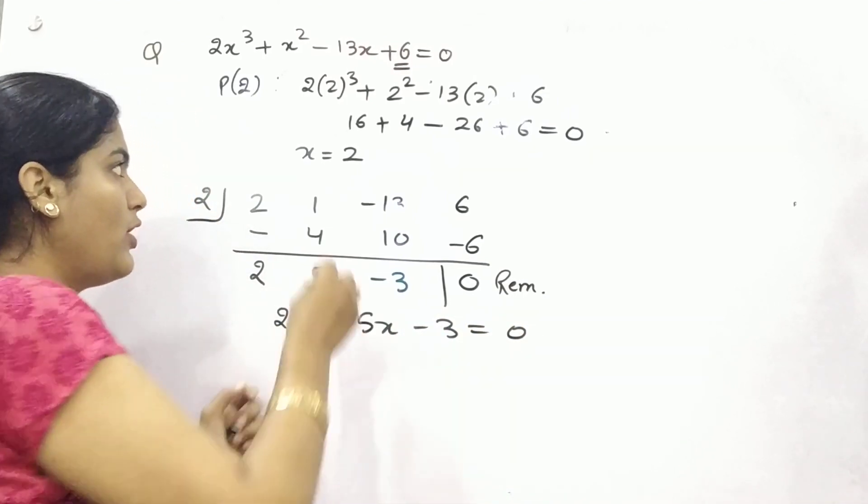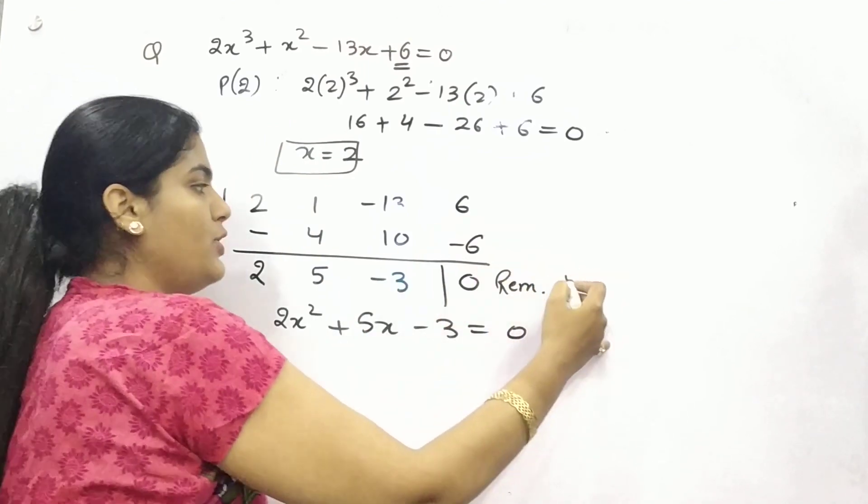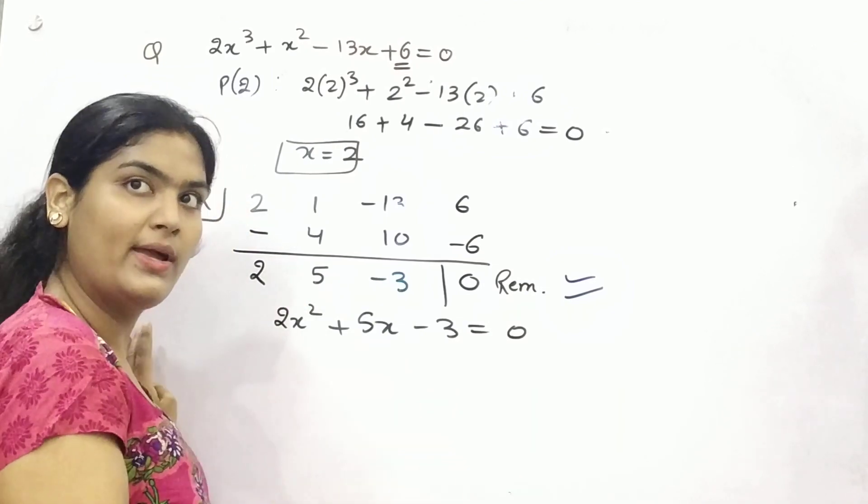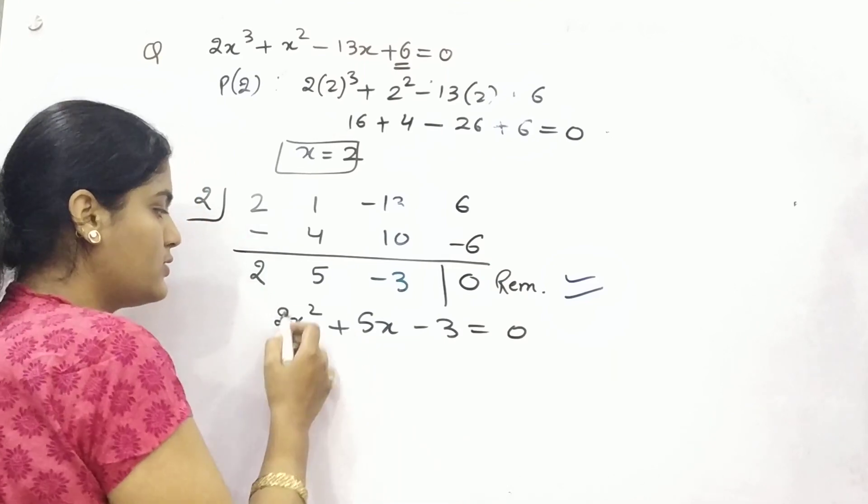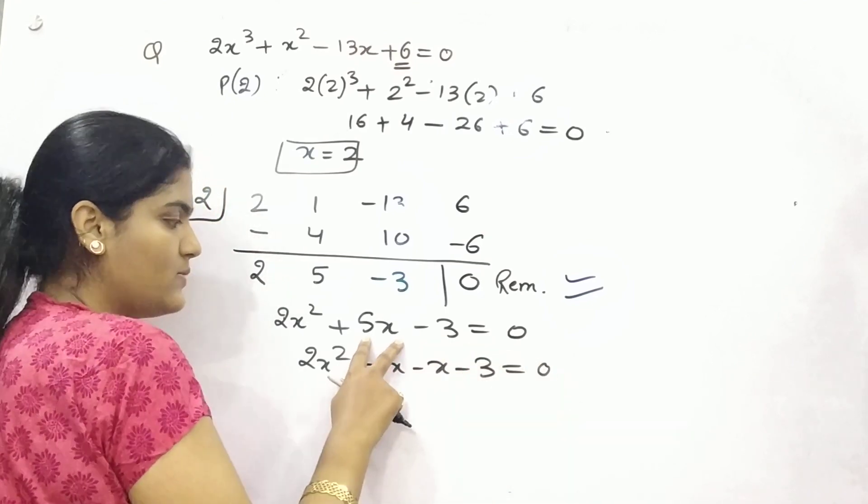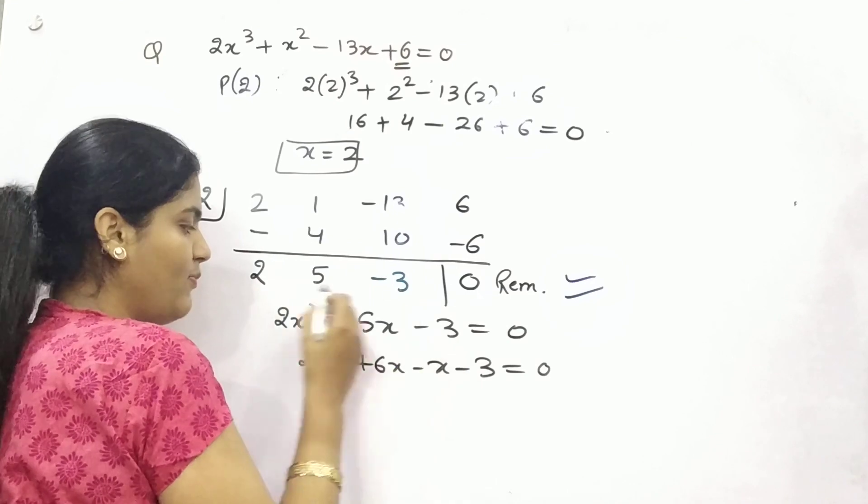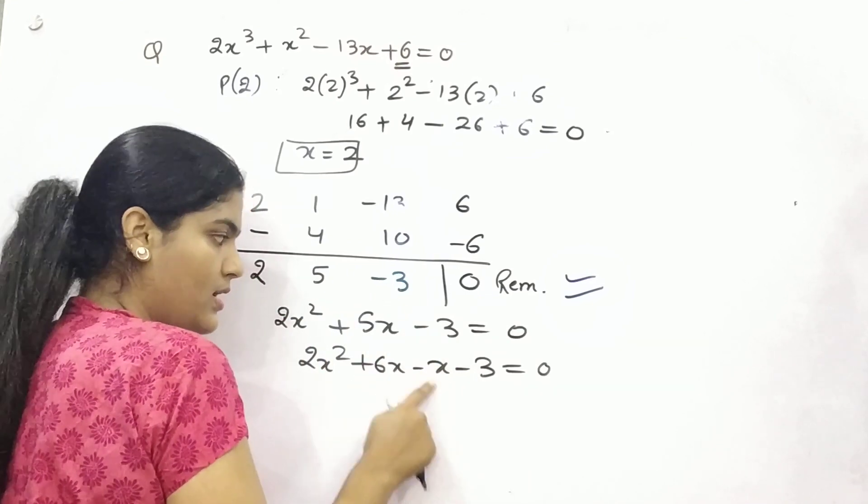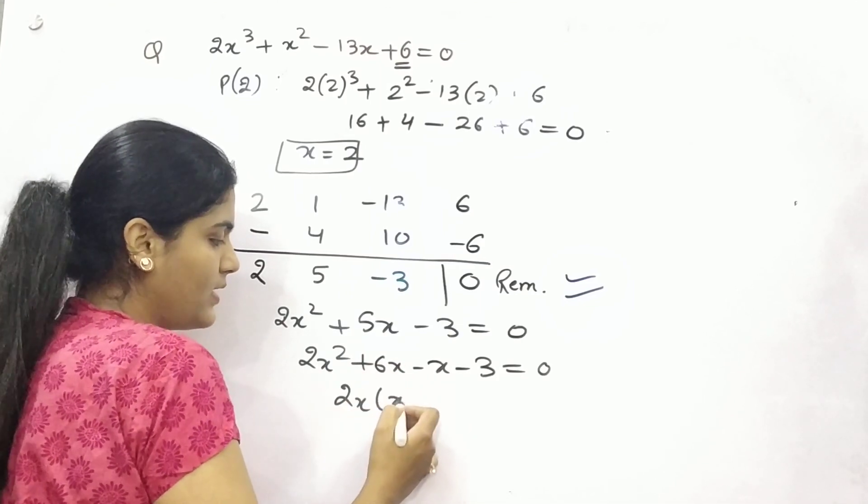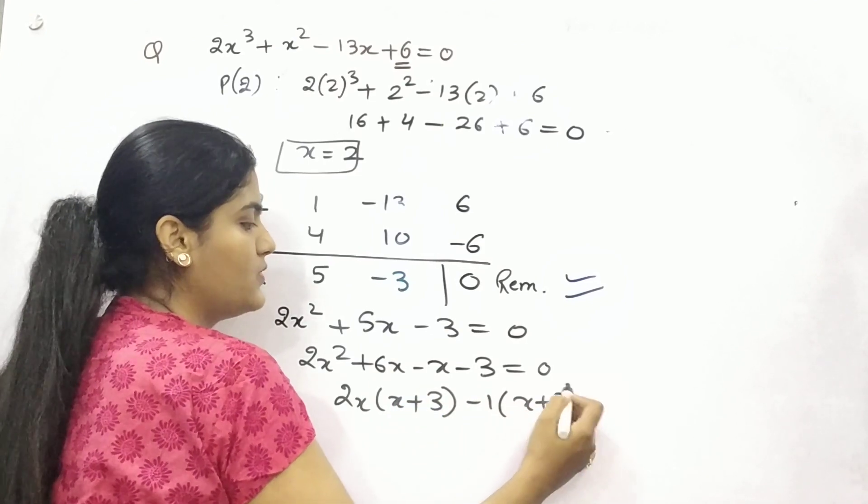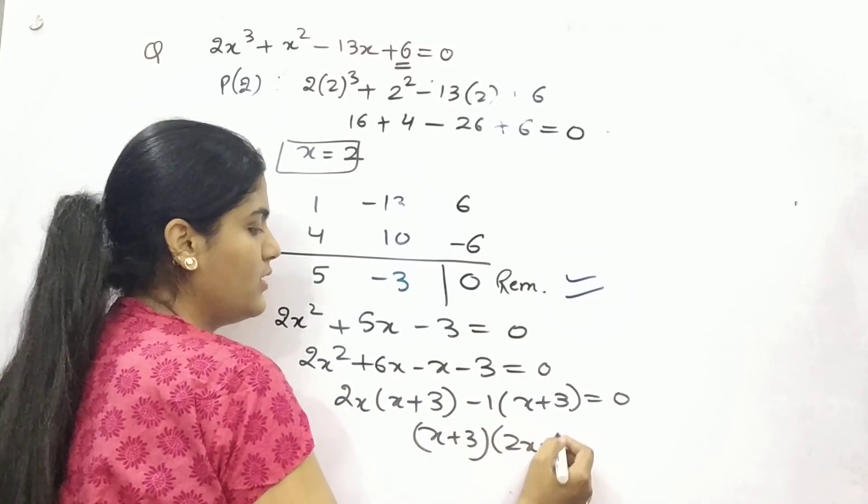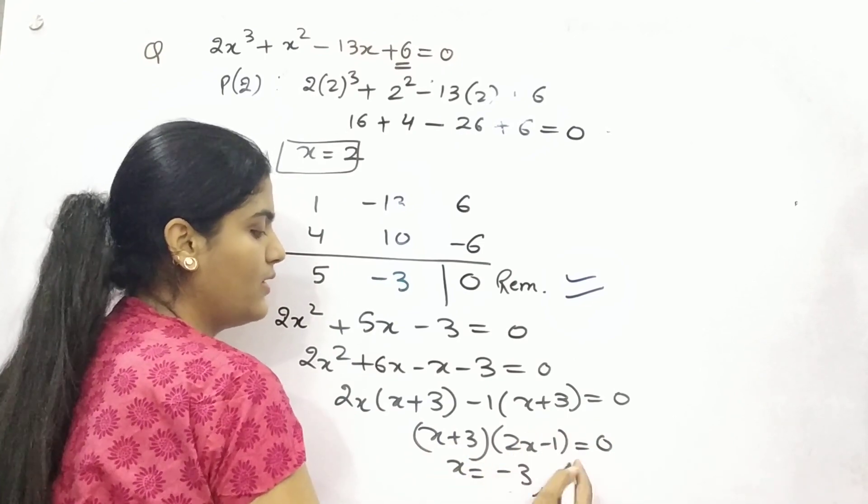Now for these, you have already found 1. Now you know how to solve this, whether by quadratic formula or splitting the term method. So 3 times 2 is 6. So 6x minus x minus 3. We split it so that we can have minus 6 in terms of multiplication and in addition plus 5. 6 minus 1 is 5. So you can take 2x as common, x plus 3, minus 1 common, x plus 3. So x plus 3 and 2x minus 1 equals 0. So x is minus 3 and 1 by 2.